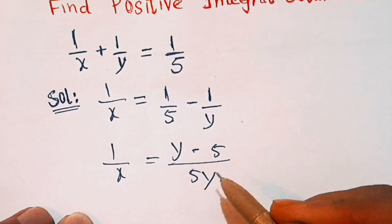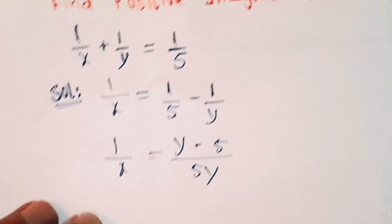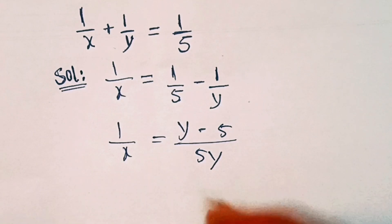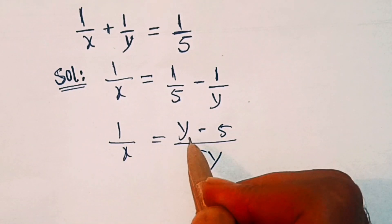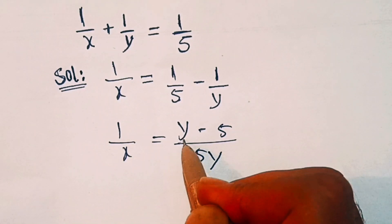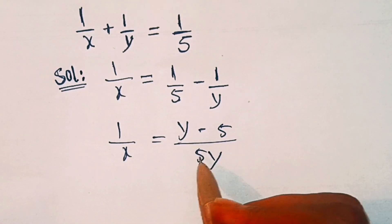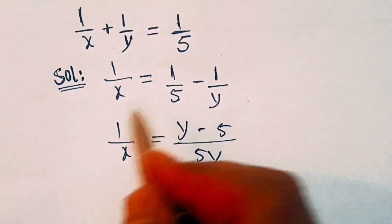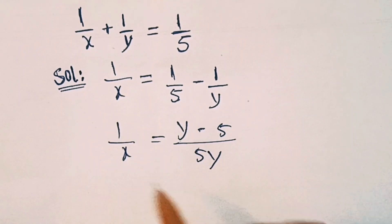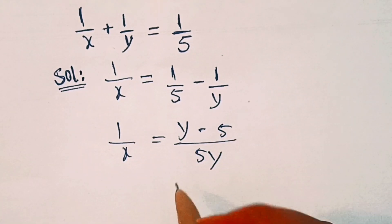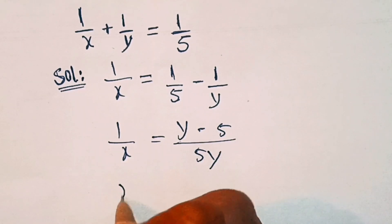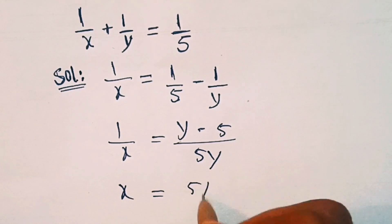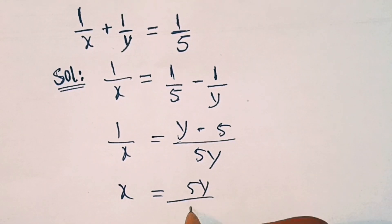From one side we have 1/x and from the other side we have (y - 5) / 5y. Now taking the reciprocal on both sides, we get x = 5y / (y - 5). Let's call this equation (A).